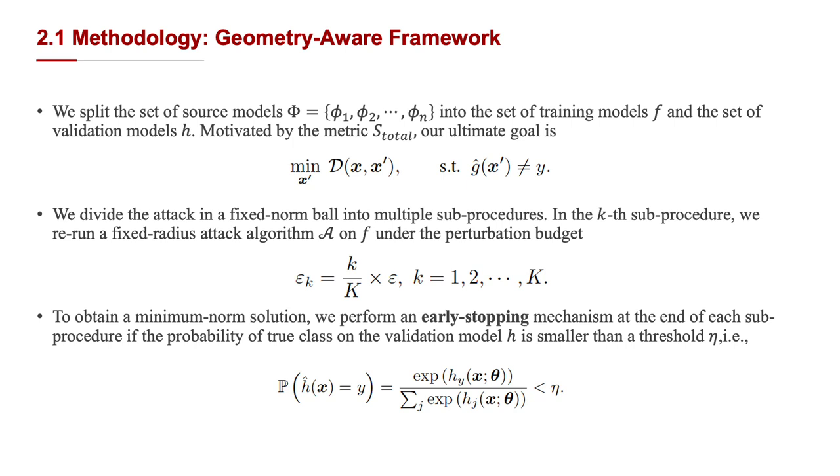However, direct optimization of this problem is intractable due to the lack of information about the test model G. We approximately solve this problem by changing the continuous space of perturbation radius into a discrete set and choosing the minimum perturbation budget such that the attack is able to fool the test model.